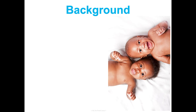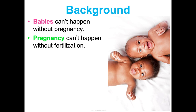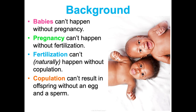Before we can jump into the process, we need a little bit of background. Babies can't happen without pregnancy, and pregnancy can't happen without fertilization, and fertilization can't happen naturally without copulation. It can happen artificially with IVF or IUI, but we're not going to get into that in this class — if you take my anatomy course, we will. Copulation can't result in offspring without an egg and a sperm. So where do the egg and sperm come from? That's what we're going to learn about today.